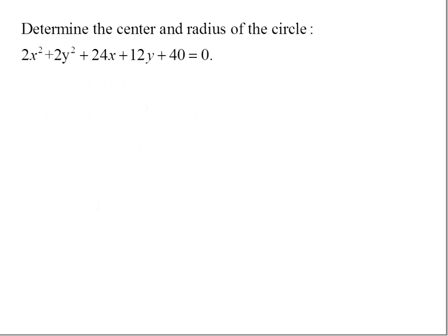Notice that this circle is given to us in general form, and if we can convert to standard form, we can determine the center and radius. Recall that our standard form is (x - h)² + (y - k)² = r², where (h, k) is our center and r is the radius of the circle.